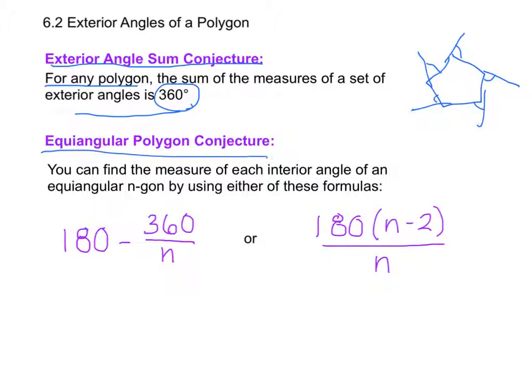Then we have the equiangular polygon conjecture, which says that you can find the measure of each interior angle of an equiangular n-gon by using either of these formulas: 180 minus 360 divided by n, or 180 times n minus 2 over n.